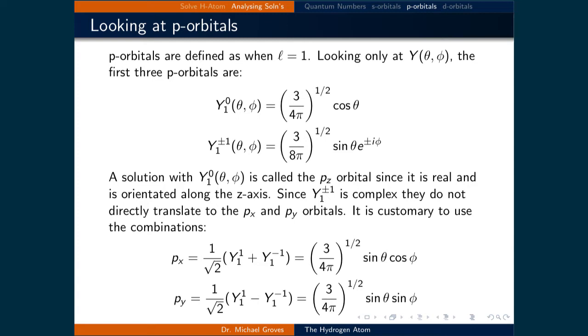It's customary to use combinations of these two solutions, so the p_x orbital is defined as 1 over the square root of 2 times Y_1,1 plus Y_-1,1, and that's equal to the square root of 3 over 4π times sine theta cos phi.